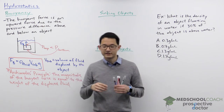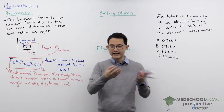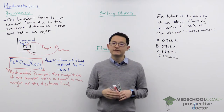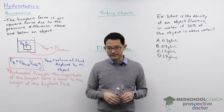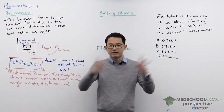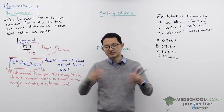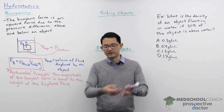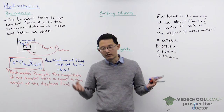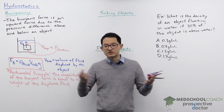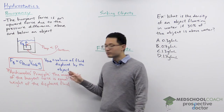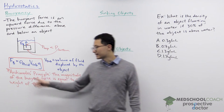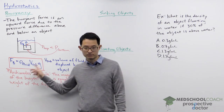The volume submerged is defined by the volume of fluid displaced by the object. If you take a container filled to the brim with fluid and drop an object inside, some amount of water spills over. The volume of fluid that spills over is the volume of fluid displaced by the object — and that is the volume submerged.